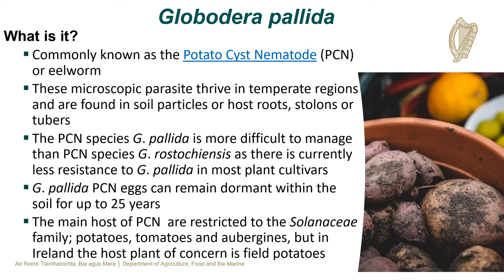Globodera palida eggs can remain dormant when in the soil for up to 25 years. The main hosts of Globodera palida are restricted to the Solanaceae family, which include potatoes, tomatoes and aubergines. In Ireland, the main host plant of concern is field potatoes.